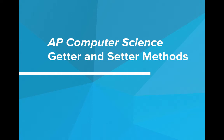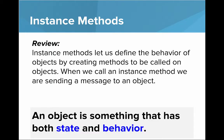In this video we're going to talk about getter and setter methods. Let's review from last time: instance methods let us define the behavior of objects by creating methods to be called on objects. When we call an instance method, we are sending a message to an object. An object is something that has both state and behavior. The state is represented by the instance variables, and the behavior is represented by the methods.